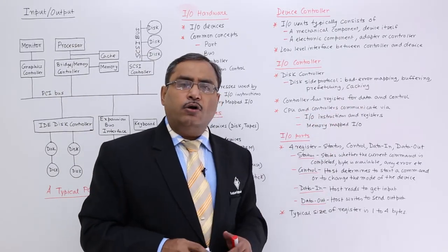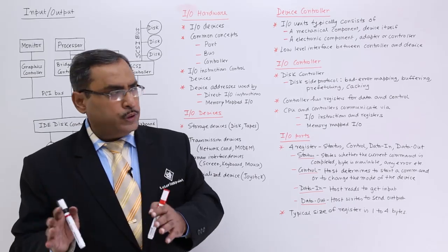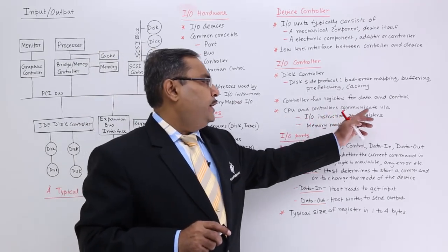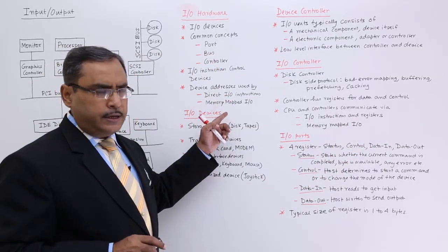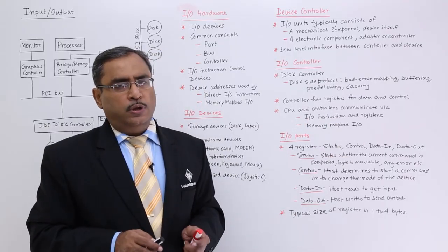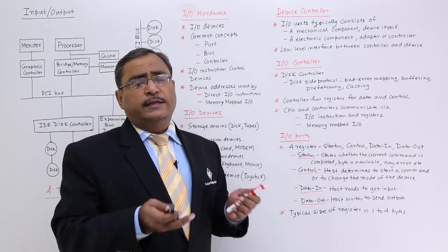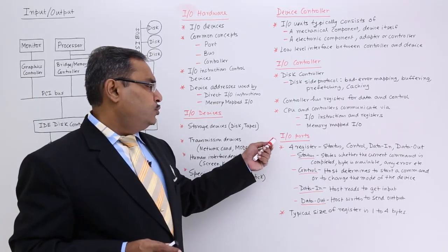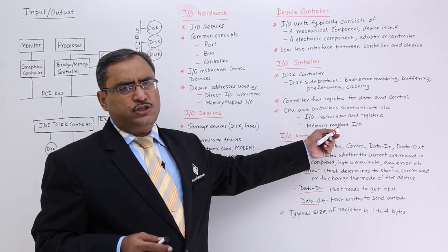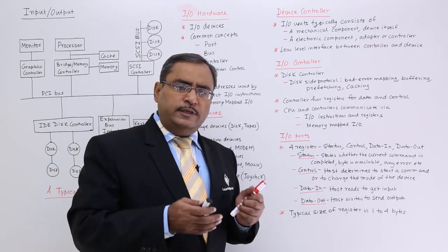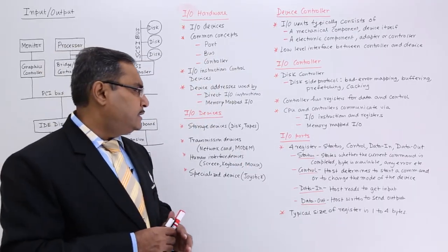The controller has registers for data and control — dedicated registers to hold data or control words. CPU and controllers communicate via I/O instructions and registers, or via memory mapped I/O. Two such instructions are the IN instruction and OUT instruction. In case of memory mapped I/O, instructions like LDA (load accumulator) or STA (store accumulator) are used — the same instructions used for memory read/write are used here for I/O devices.